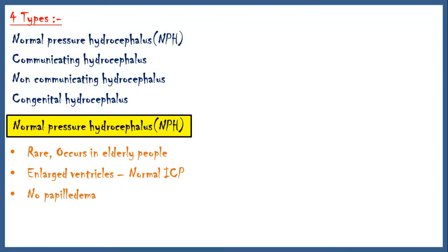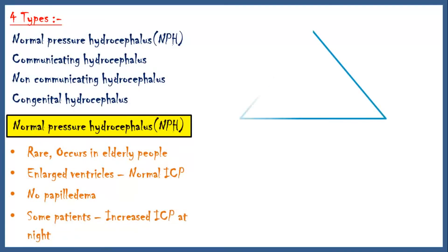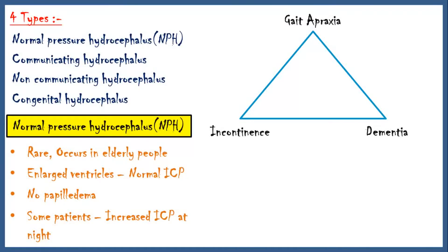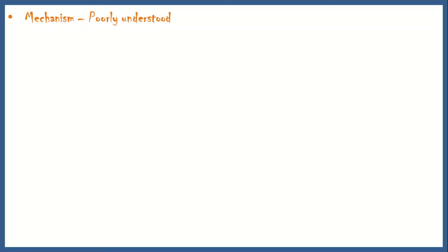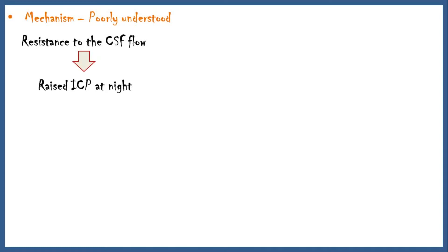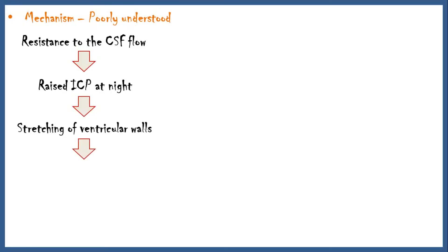Sometimes intracranial pressure increases at night. There is a classic triad of symptoms in NPH: gait apraxia, where there is difficulty in initiating walking movements; dementia; and incontinence — initially urinary incontinence followed by fecal incontinence. Headache is not a typical symptom of NPH. The mechanism of NPH is poorly understood; however, some theories suggest there is resistance to CSF flow within the ventricles, leading to increased intracranial pressure at night, which causes stretching of the ventricular walls and ultimately enlargement of the ventricles.